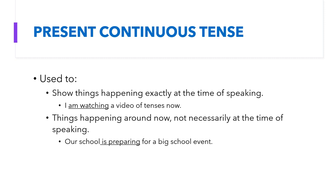Present continuous tense is also used to show things happening around now, not necessarily at the time of speaking. For example, 'our school is preparing for a big school event.' Actually, now everybody is studying, but after school time, the committee and some teachers and students are going to continue their work to prepare for the event.